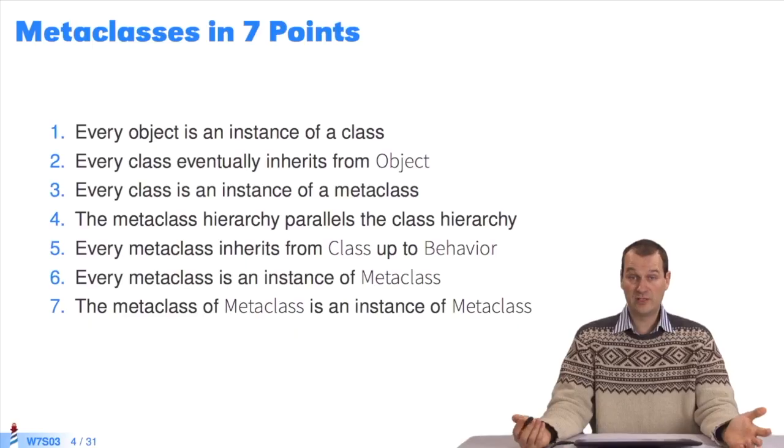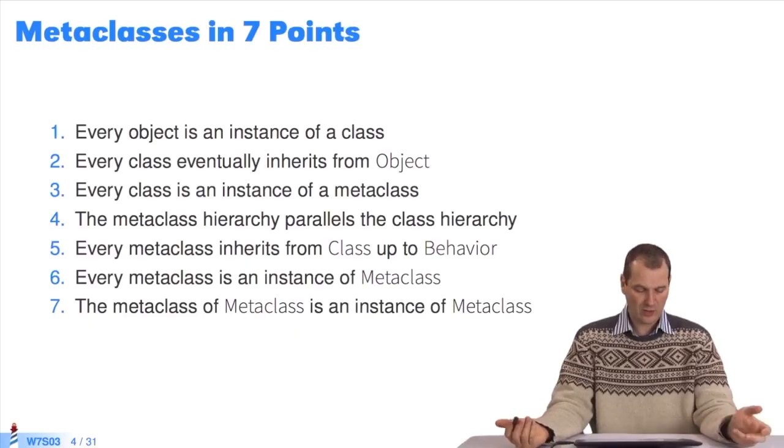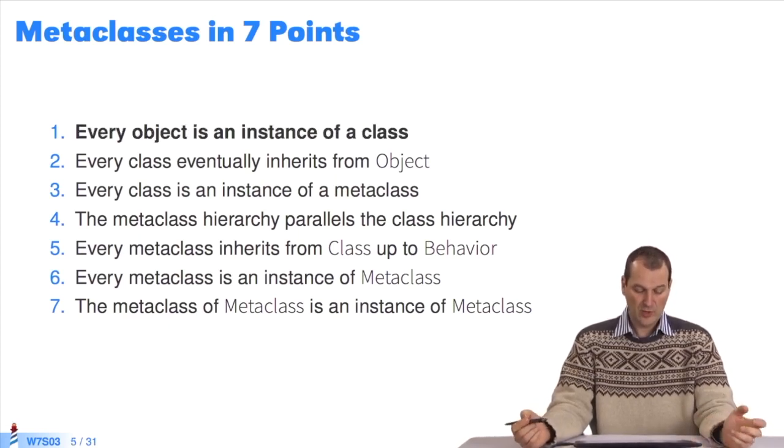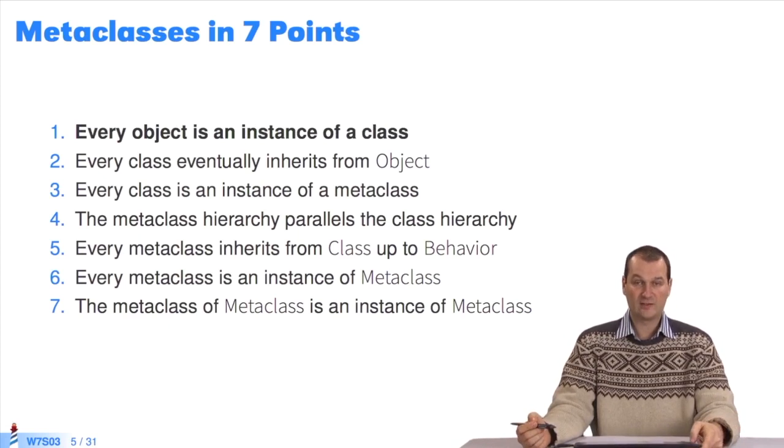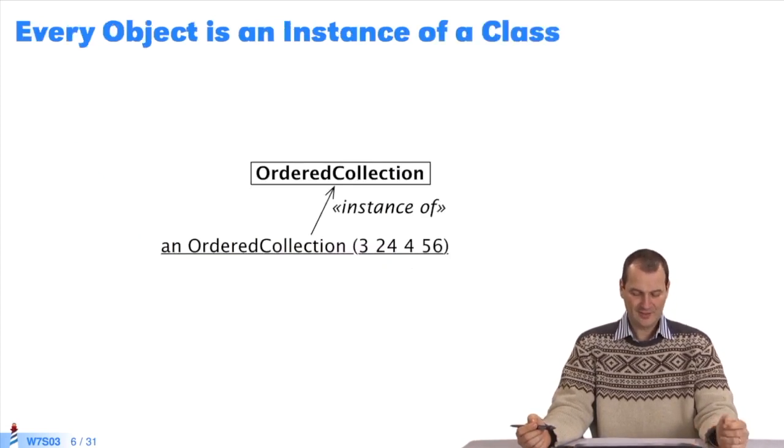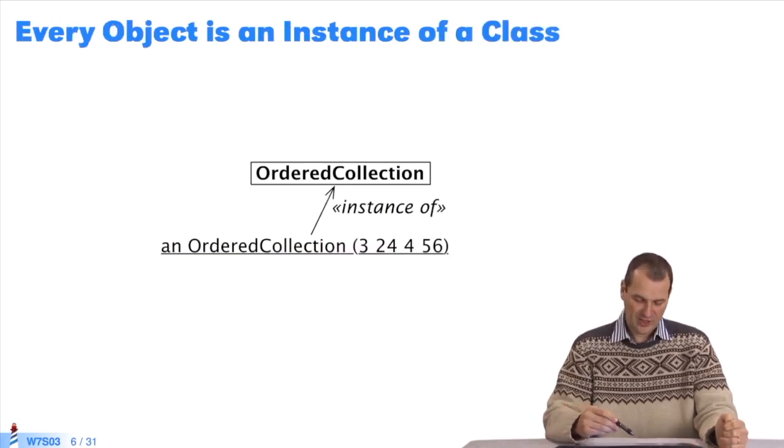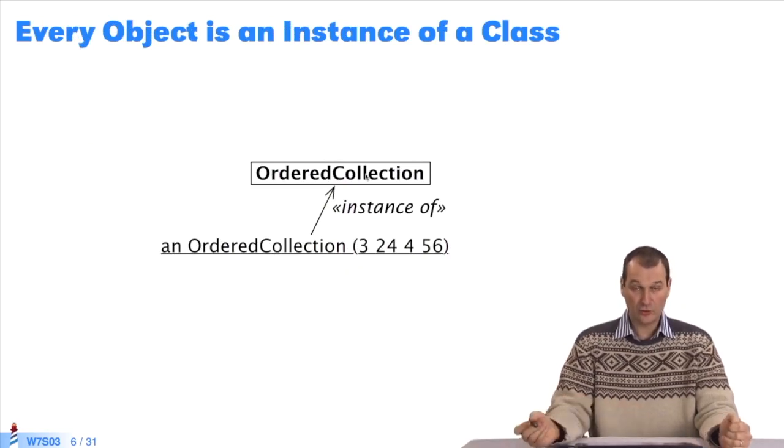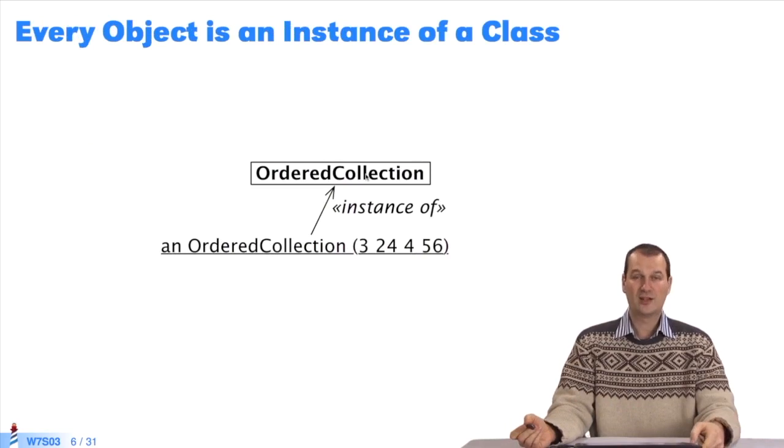To explain metaclasses, we summarize them in seven points, which are relatively simple. Every object is an instance of a class. Look at this example. The object ordered collection is an instance of this class. So far, it's clear.